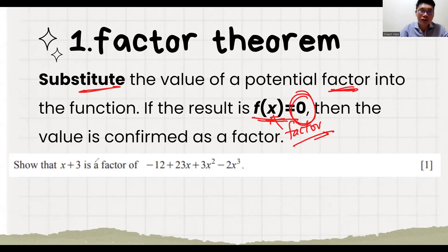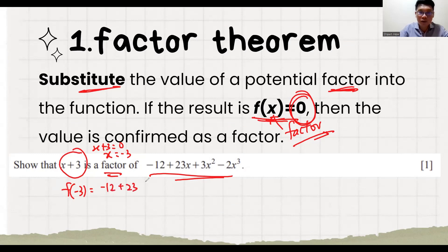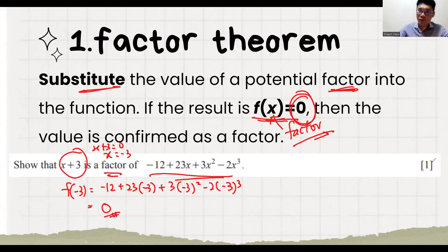So let's see the questions. First they ask you to show that this thing is a factor of this. If it's a factor, x plus 3 equals to 0, so x equals to minus 3. After we know the value of x is minus 3, we substitute f(minus 3) equals to 0. You key in the calculator, you find that it is 0, and you gain this mark. This is how you confirm whether it is a factor or not.